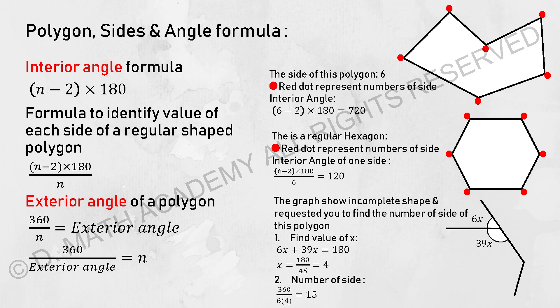So for example, over there, the side of a polygon is 6. So for you to calculate the interior angle, just take 6 minus 2 times 180, you will get 720.